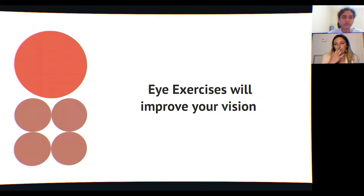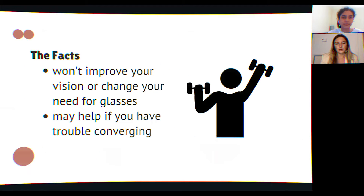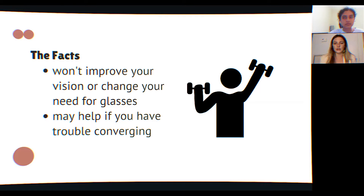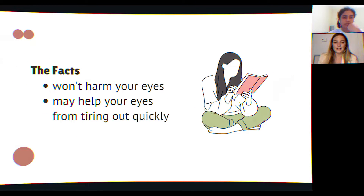Myth three: eye exercises will improve your vision. There's been no scientific evidence to prove this — they won't change your need for glasses. There are some exercises that help with convergence (when your eyes track something up close), and vision therapy can help train that system more efficiently. Myth four: reading in dim light is harmful for your eyes. It won't harm your eyes, but it may increase eye strain and headaches, so I recommend reading with some light.